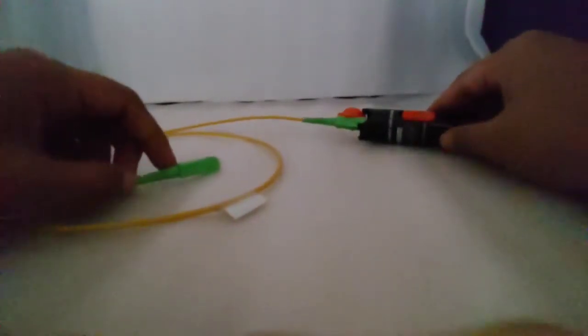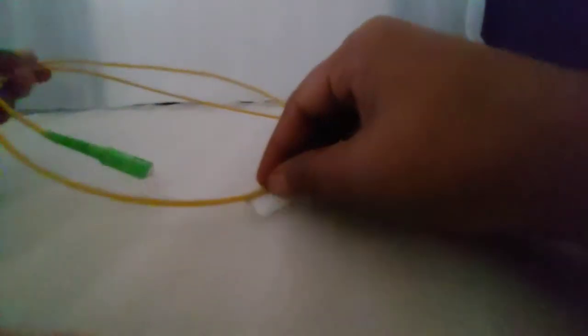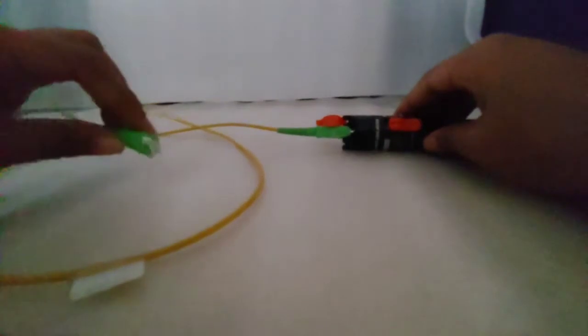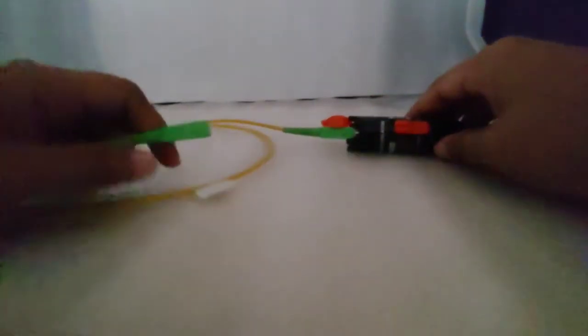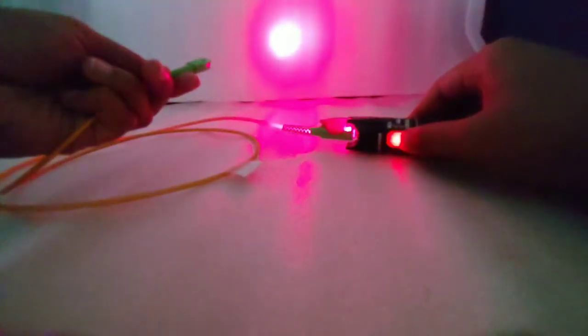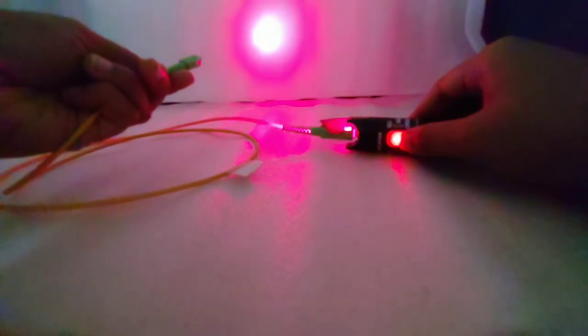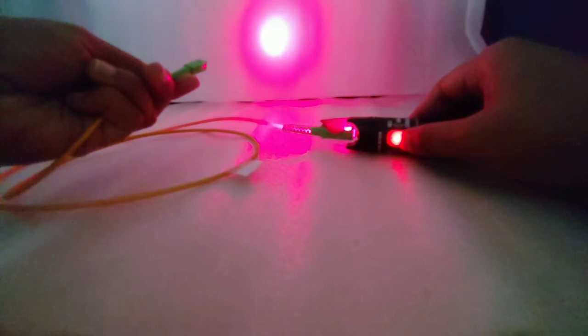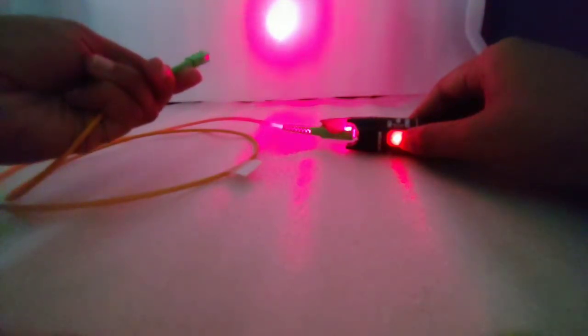Now I am passing to a next type of experiment which I am going to do with the VFL and a patch cord. This is an optical fiber patch cord with both sides connectorized with SC APC connectors. I have connected one end of the connector patch cord to the VFL, and now I am switching on my VFL.